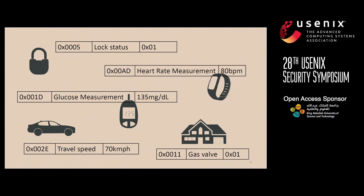If a characteristic value holds a user's heart rate or glucose measurement, then that data has associated privacy concerns and we wouldn't want random people reading that information. If the characteristic value controls the speed or movement of a BLE-enabled hoverboard, then that data has safety implications, and we wouldn't want random entities being able to write to it. So there are occasions where we would want to control access to the characteristics.